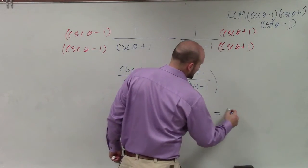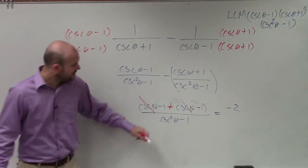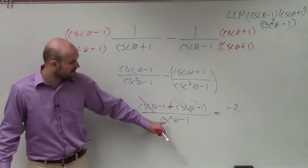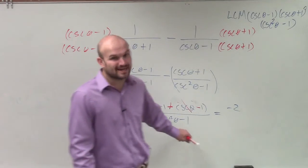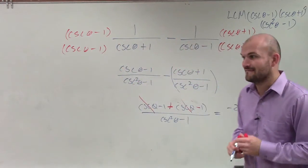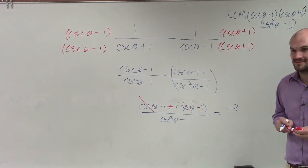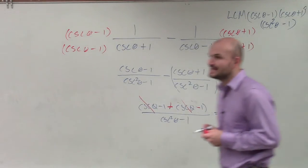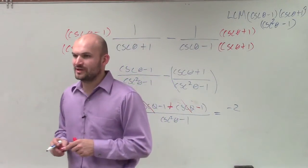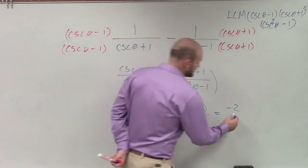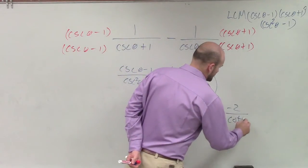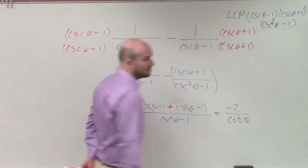So therefore, that's just going to represent a negative 2. And then cosecant squared of theta minus 1, I can use my Pythagorean identities to rewrite that. Cosecant goes with cotangent, right? So I can rewrite this as a negative 2 over cotangent squared of theta.